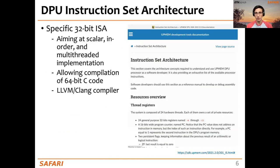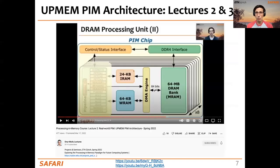In the current generation of this architecture, this is an in-order pipeline that can run at a frequency of up to 425 megahertz, and it's a fine-grained multi-threaded pipeline with 24 hardware threads. The pipeline executes instructions from the UPMEM instruction set architecture, which is a specific 32-bit ISA, and it's also possible to compile 64-bit C code. If you want to refresh on the architecture of the UPMEM PIM system, the DPUs, and some micro-benchmarking, you can take a look at lectures two and three of this course.